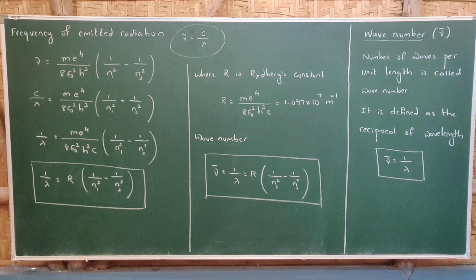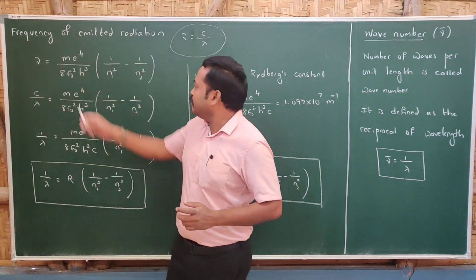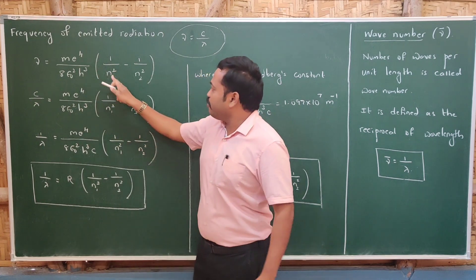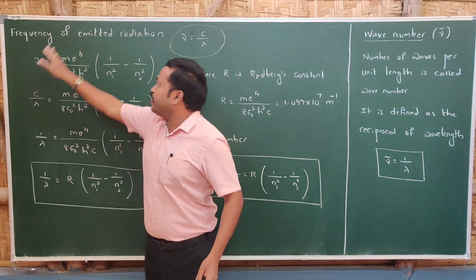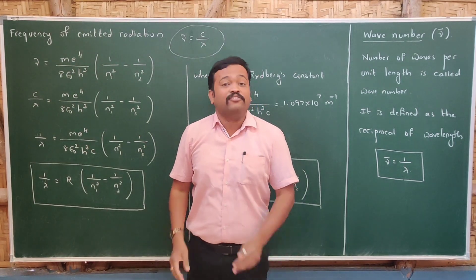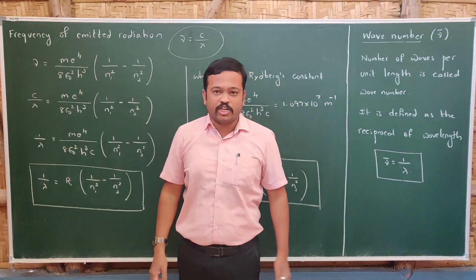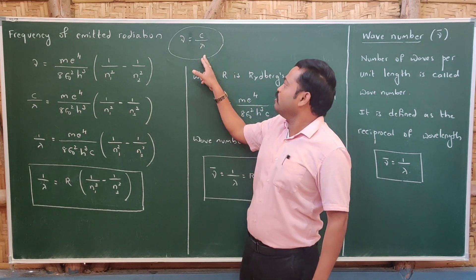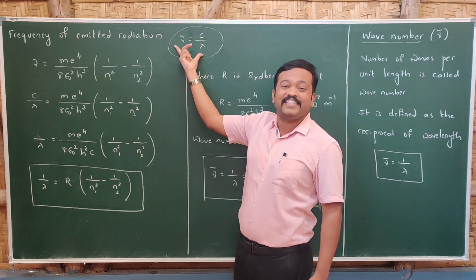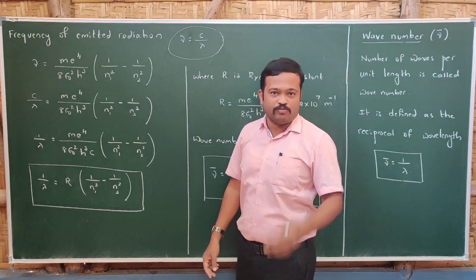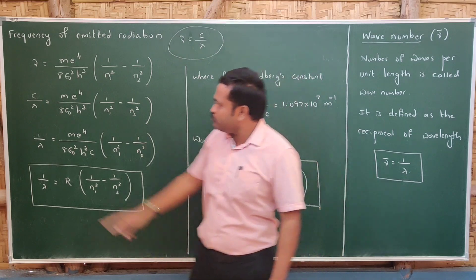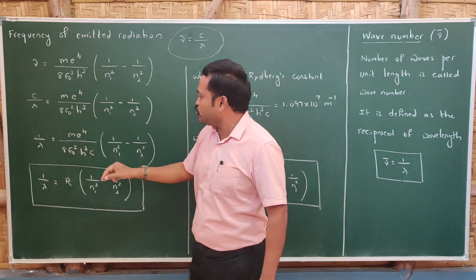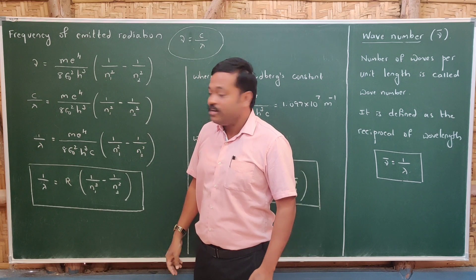We have the frequency of the emitted radiation: ν equals me⁴ divided by 8ε₀²h³, multiplied by 1/n1² minus 1/n2². Frequency and wavelength are inversely proportional, related by ν = c/λ, where c is the speed of light in vacuum. Substituting c/λ in place of ν, we get: c/λ equals me⁴ divided by 8ε₀²h³, multiplied by 1/n1² minus 1/n2².